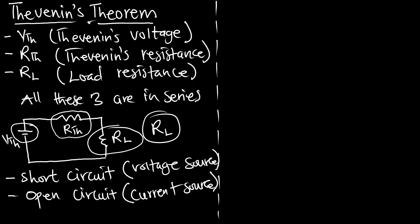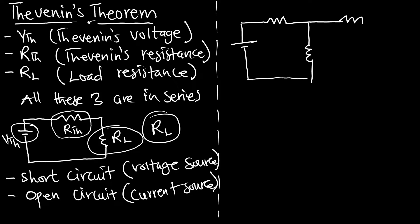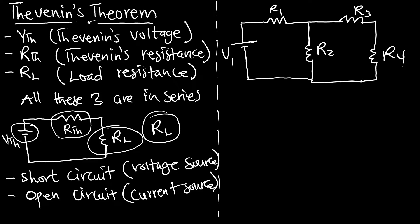Let's have an example circuit. This is our voltage source V1, and we have resistor 1, resistor 2, resistor 3, and resistor 4. What Thevenin's theorem is going to do is ask us to find current through one particular resistor — say, find the current in R4.